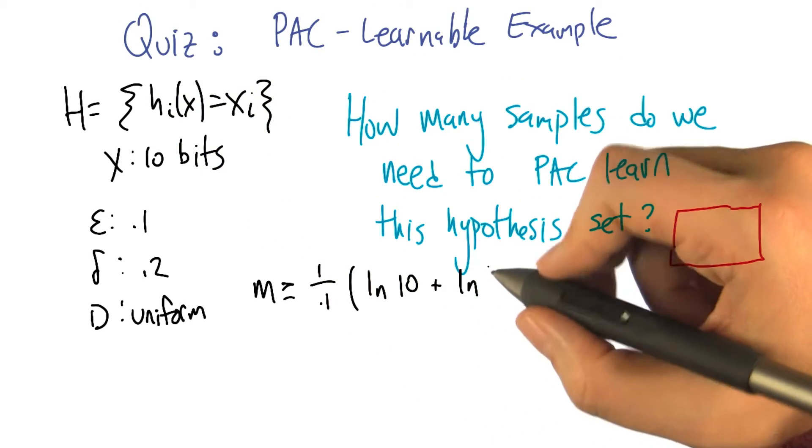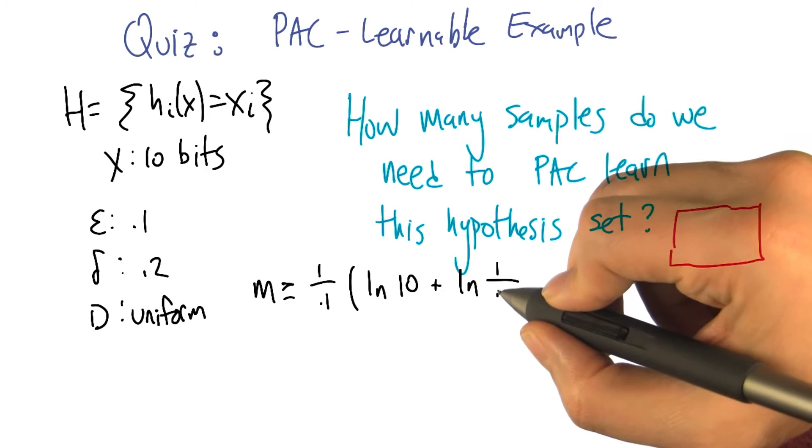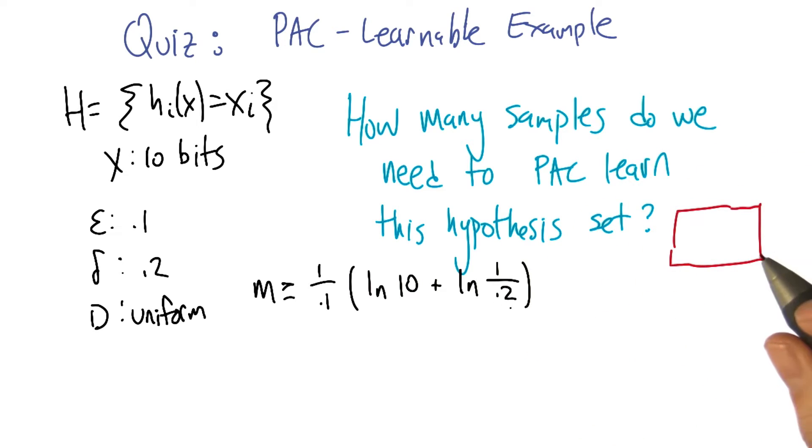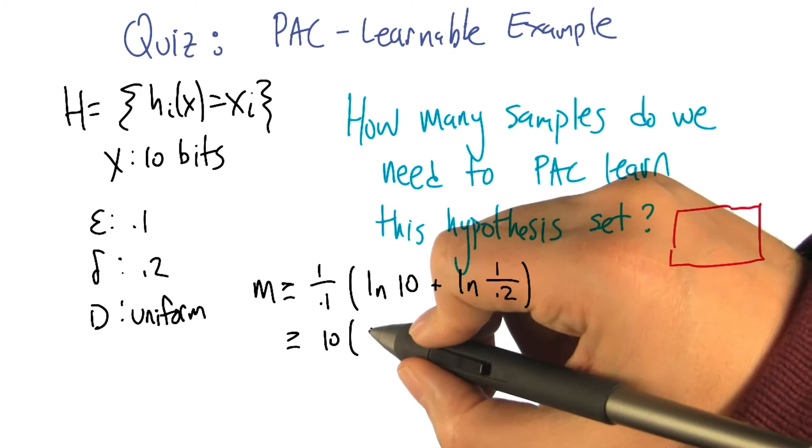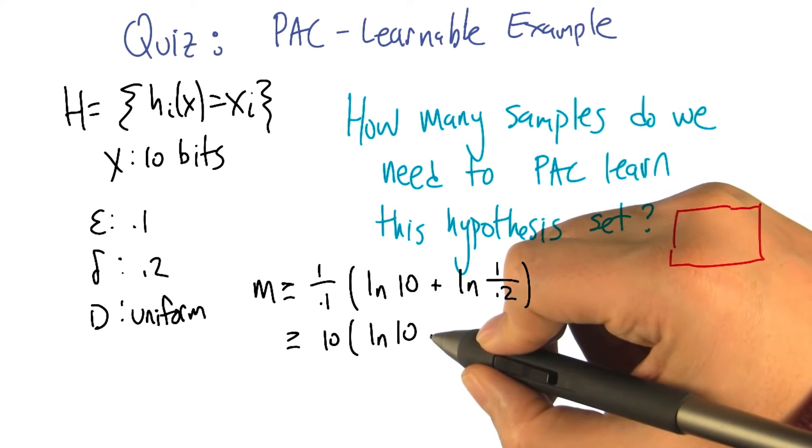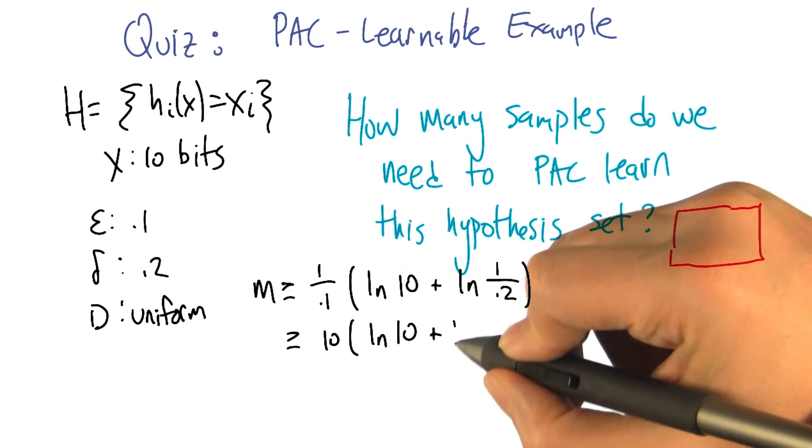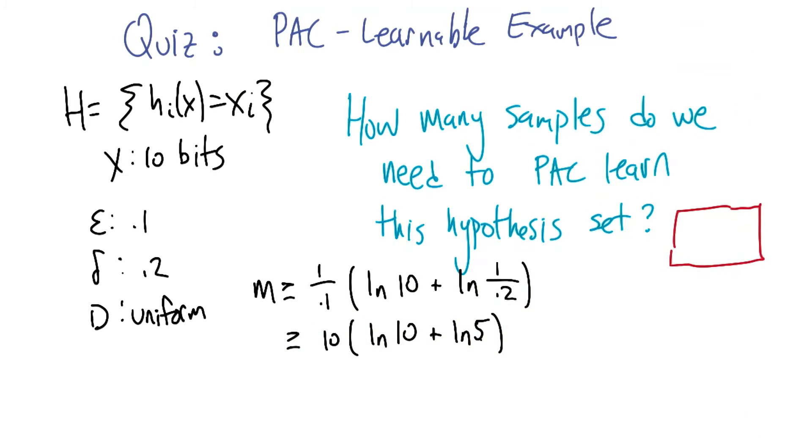So, plus the natural log of one over delta. That would be greater than or equal to 10 times the natural log of 10 plus the natural log of five. Let's see. The natural log of 10 is something like three point something. Natural log of five is something like two point something. We add those up, multiply it by 10. You're going to end up with 39.12.